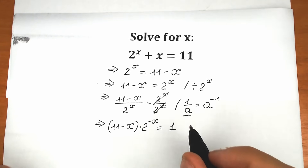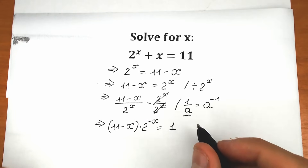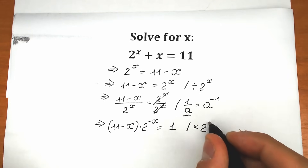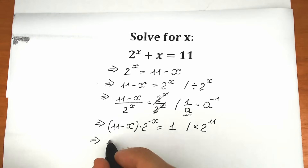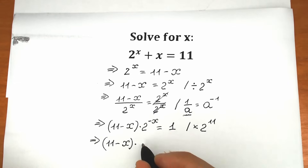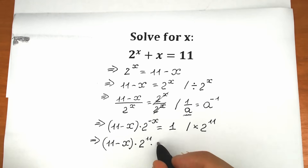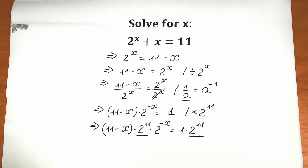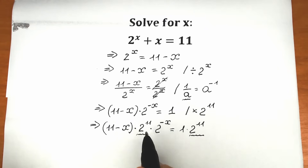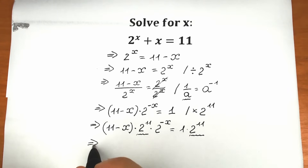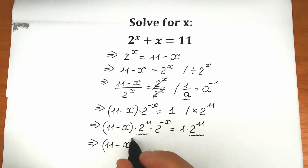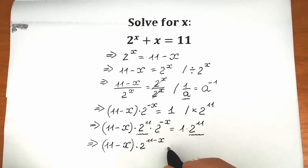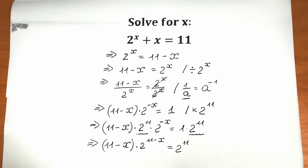Right now we need to multiply both sides by 2 to the power 11 — in one minute you will understand why. We are multiplying both sides by 2 to the power 11. As a result we have 11 minus x times 2 to the power 11 times 2 to the power minus x, and on the right side we have 1 times 2 to the power 11. Now we use the property that when we have the same base with different powers in multiplication, we add the powers. So 2 to the 11 times 2 to the minus x gives 2 to the power 11 minus x. As a result we have 11 minus x times 2 to the power 11 minus x equal to 2 to the power 11.